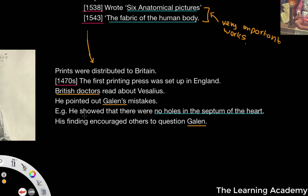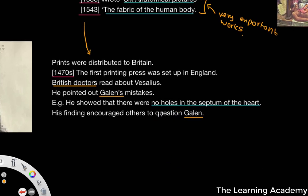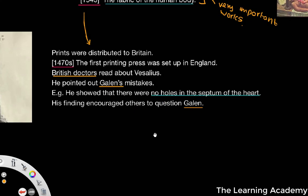For example, one of Galen's mistakes was that he had suggested there were holes in the septum of the heart. This was something that Vesalius debunked, and it encouraged others to question Galen.